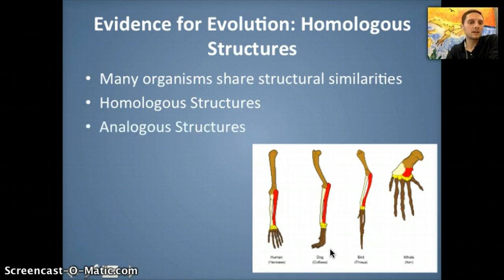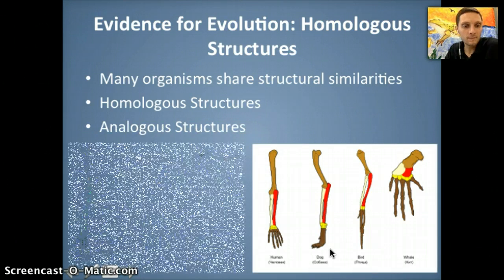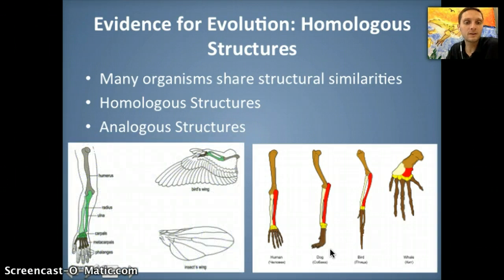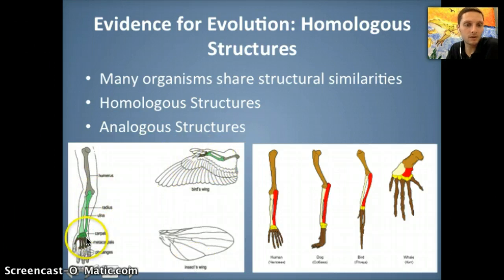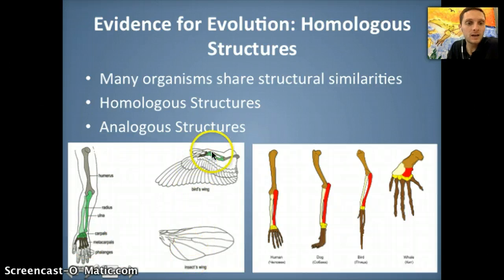The opposite of homologous structures is analogous structures — structures that are similar in function but different in structural arrangement. An example is comparing an insect wing to a bird wing. A human arm and a bird arm share the same bone structure — homologous. But an insect wing and a bird wing have no similar bone structures; insects don't even have bones. So those are analogous structures.